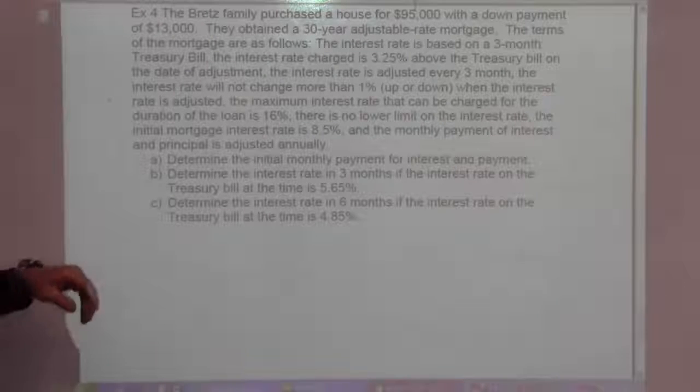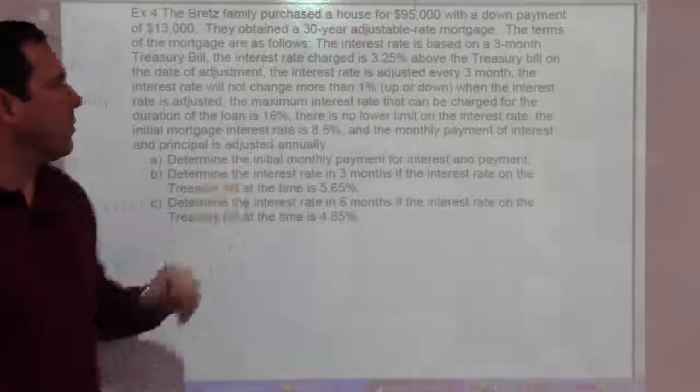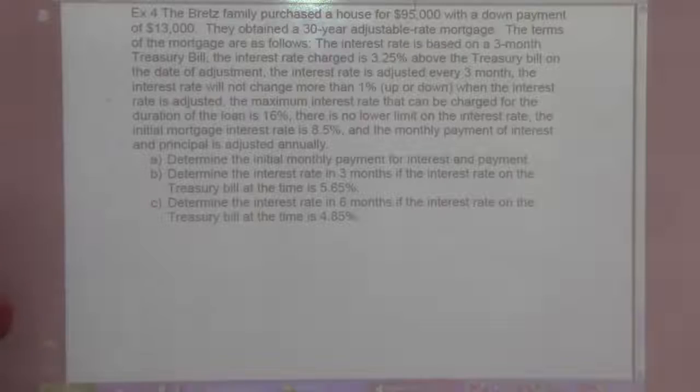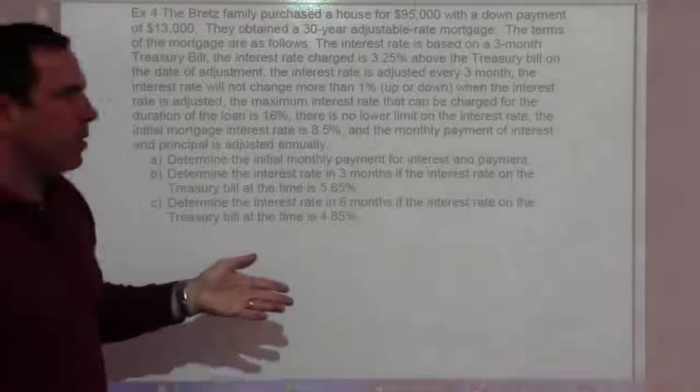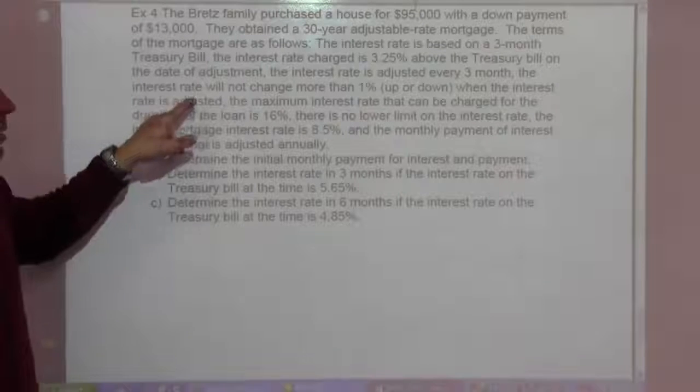The interest rate is based on a 3-month Treasury bill. The interest rate charged is 3.25% above the Treasury bill on the date of the adjustment. We've seen for years now the Treasury bills have been around 0%, 1%.